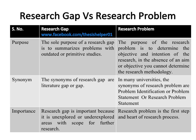The synonyms of research gap are literature gap or simply gap. While in many universities, the synonyms of research problem are problem identification, problem statement, or research problem statement.